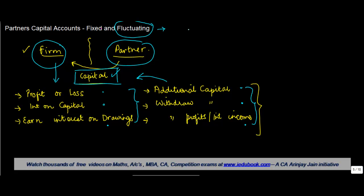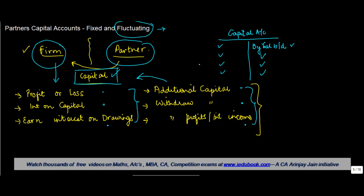In a fluctuating capital account, the capital account is made and all these entries will be posted on the debit side. There will obviously be a balance brought down, and then all entries will be made in this very same account. The balance of this account will keep on fluctuating from time to time — that's what the name suggests. You have an opening balance, and any transaction that has some impact on the capital account is taken directly to this particular account.